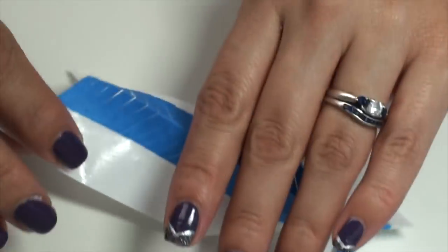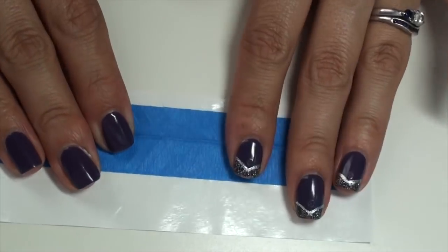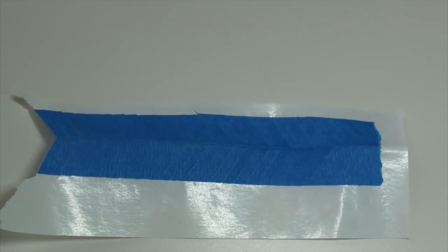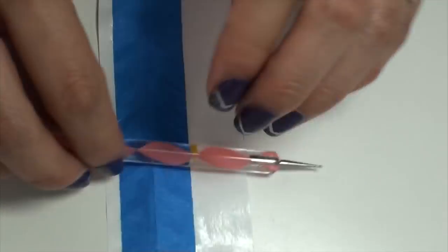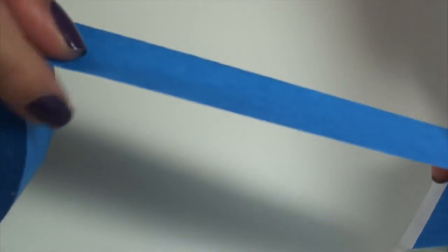Now I'm just unfolding that piece of painter's tape, pushing down as best I can to get rid of that little fold, and I'm just taking my dotting tool here and just evening it out.